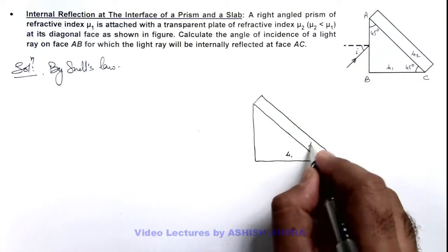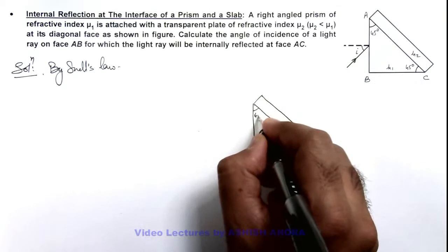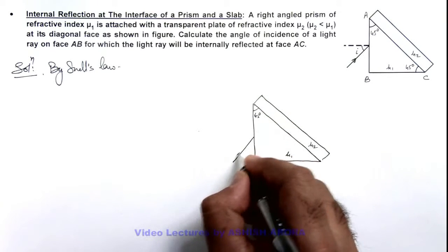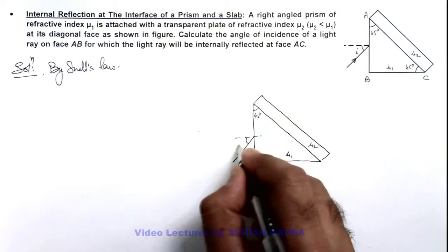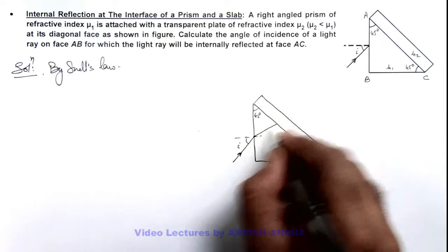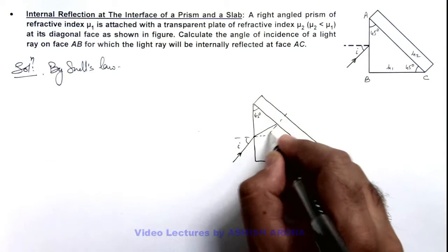This is μ₁, this is μ₂, this angle is 45 degrees. If a light ray is incident at angle i, this will refract and finally be incident on the other face at θc.